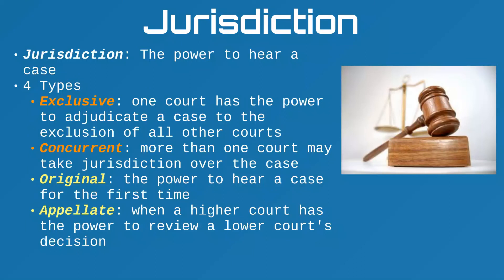When you talk about the power of the courts, you're really looking at what is called jurisdiction — the power to hear certain types of cases. There are four types, and the easiest way to understand them is by looking at them in pairs. The first pair: exclusive and concurrent. Exclusive means that one court has the power to hear a case and no other courts can — it has to be filtered to one court in particular.